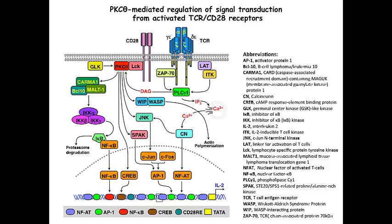Phosphorylation and activation of JNK leads to phosphorylation of c-Jun, which dimerizes with newly synthesized c-Fos to form an active AP-1 transcription factor that enters the nucleus and targets AP-1 binding sites. In addition, PKC Theta-mediated phosphorylation and activation of SPAC increases AP-1 activity via an unknown mechanism. PKC Theta also phosphorylates the CREB transcription factor and promotes its binding to a CREB-specific site in the IL-2 gene promoter.